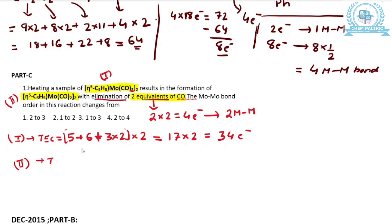For complex 2, the Tc complex in η5 mode: 5 (CP) + 6 (Tc valence electrons) + 2 CO (2 × 2 = 4) = 15 per metal. Multiplied by 2 metals: 15 × 2 = 30 total electrons.